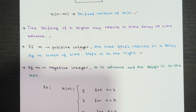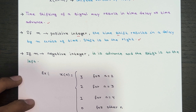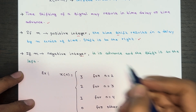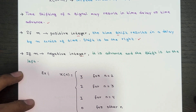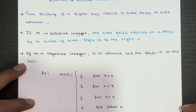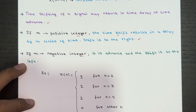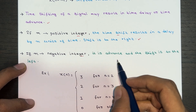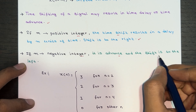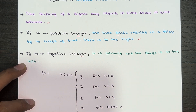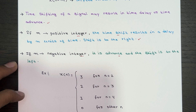On the other hand, if m is a negative integer, the time shift will result in an advance of the signal by mod m units in time. This means that each sample of X of n will be shifted to the left — it's like rewinding time but in a mathematical sense. So if m is a negative integer, it is the advance case and the shift is to the left.